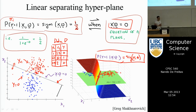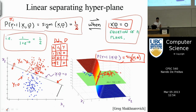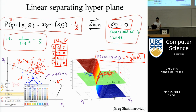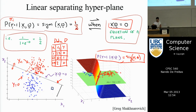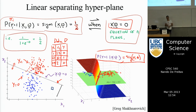Essentially, that's what logistic regression is all about. You get data in pairs of x's and y's; your task is to separate the data into two classes so that if you get a new point, you can classify it. Once you have the equation of that line, you just evaluate it: if x times theta is less than zero, it's class 0; if it's greater, it's class 1.